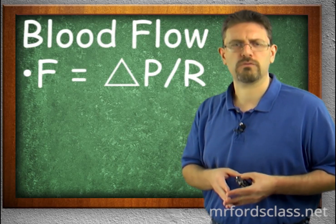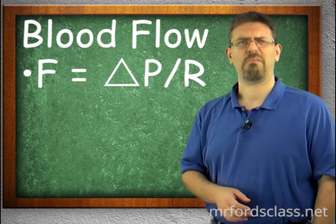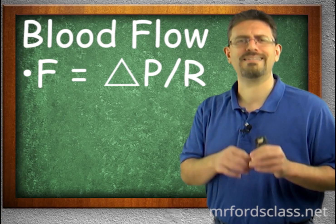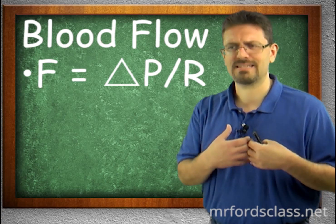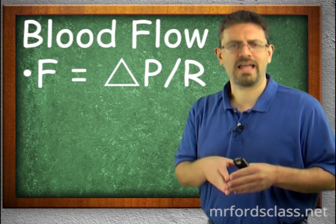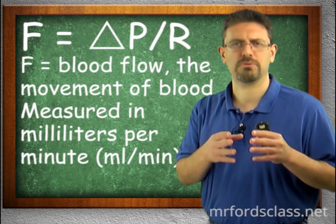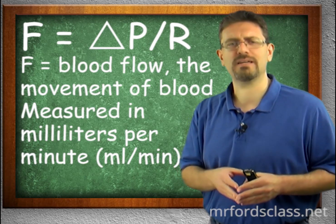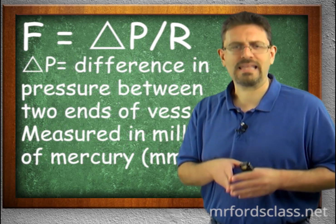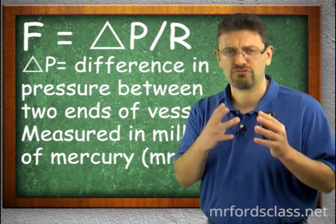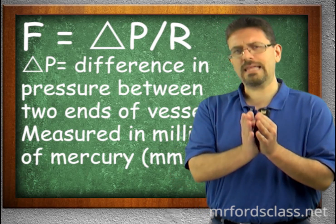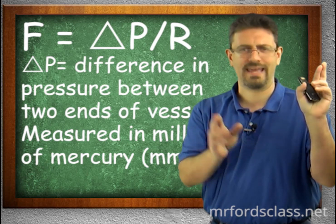Blood flow is expressed as F equals delta P over R. F is the blood flow — the measurement of the actual movement of blood — measured in milliliters per minute. Delta P is the difference in pressure between the two ends of a vessel. Blood will only flow if there's a pressure difference from one end to the other. If both ends have the same pressure, there's no flow.